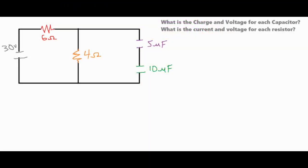In this video, we're going to be taking a look at an RC circuit, and we're going to be solving for the charge and voltage across the capacitors, and then we're also going to find the current and voltage drop through each resistor.